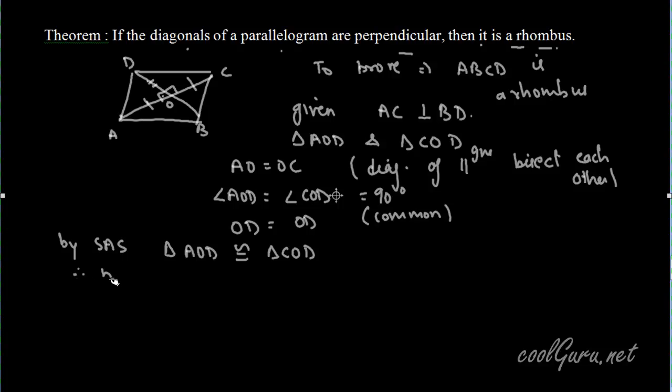Therefore by CPCT we can say that this side AD of this triangle is equal to CD. AD is equal to CD.